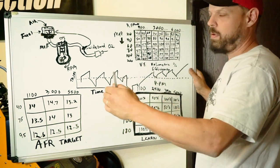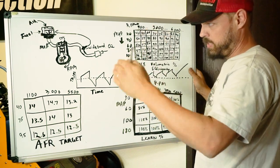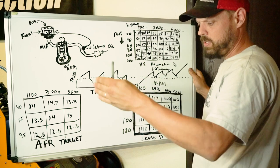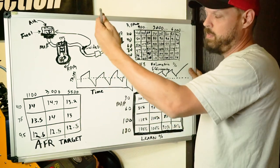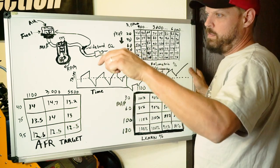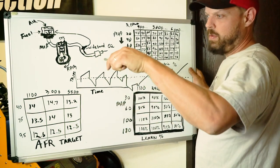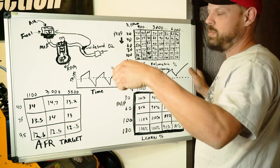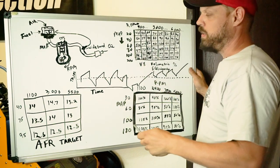we're going to be spraying the injectors every single tach signal or RPM signal from a distributor or on an LS engine. It will be for every time the crank position is calculated to be in the right position for sequentially injecting an injector.